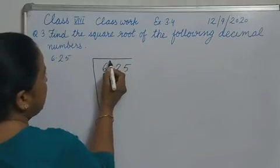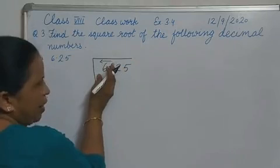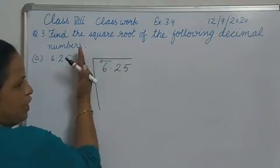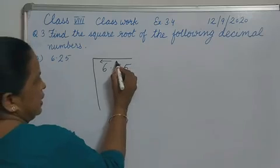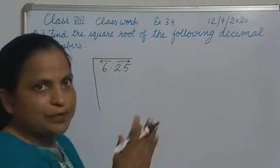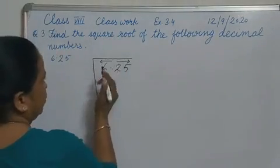We will make pairs before the decimal, that is the whole part. We will make pairs from right to left. And in the decimal part, we will make pairs from left to right, opposite direction. Decimal will be the mirror, okay? So this arrowhead this side, this arrowhead that side.